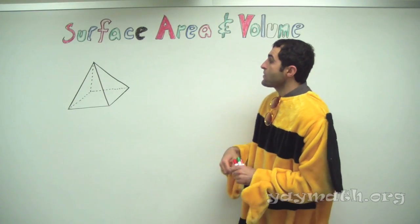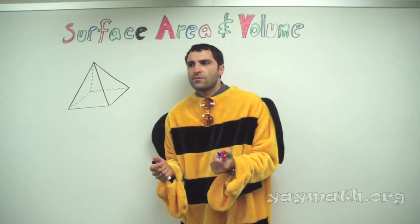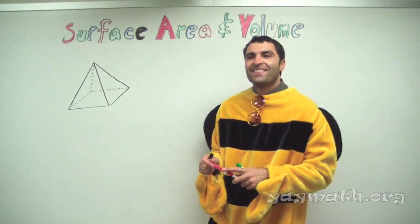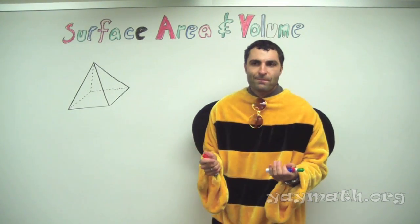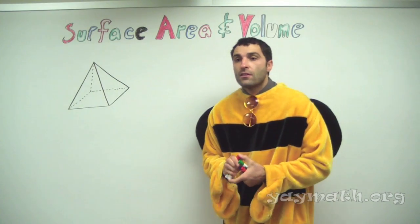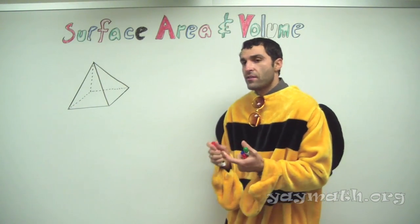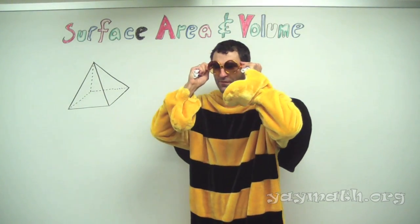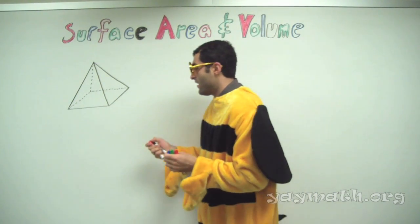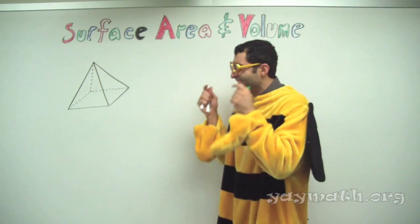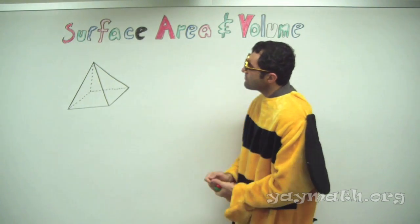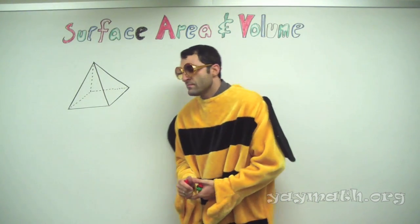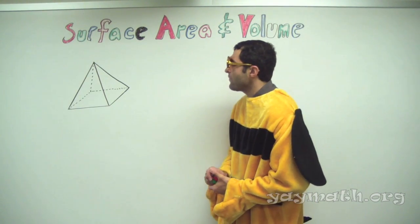Okay. And we're going to talk about the surface area. What does surface area mean, basically? Like the whole area of a shape? Yes. The whole area. So what do you mean by the whole area? Like all the faces? All the faces, right. How many faces do you count? One, two, three, four, five. Yeah, there are five faces.